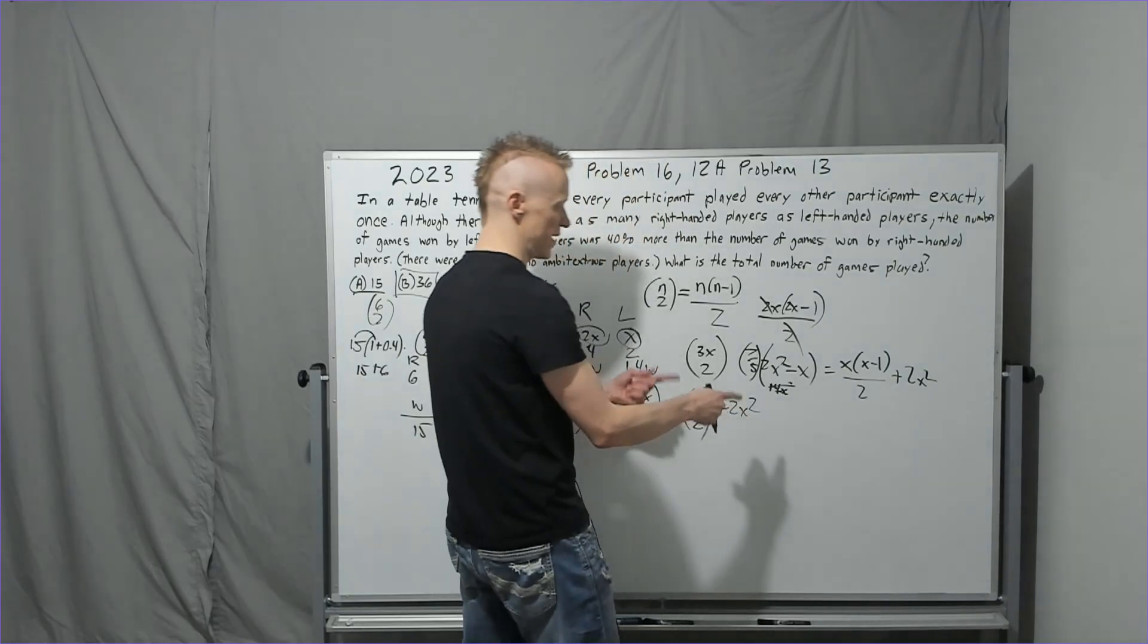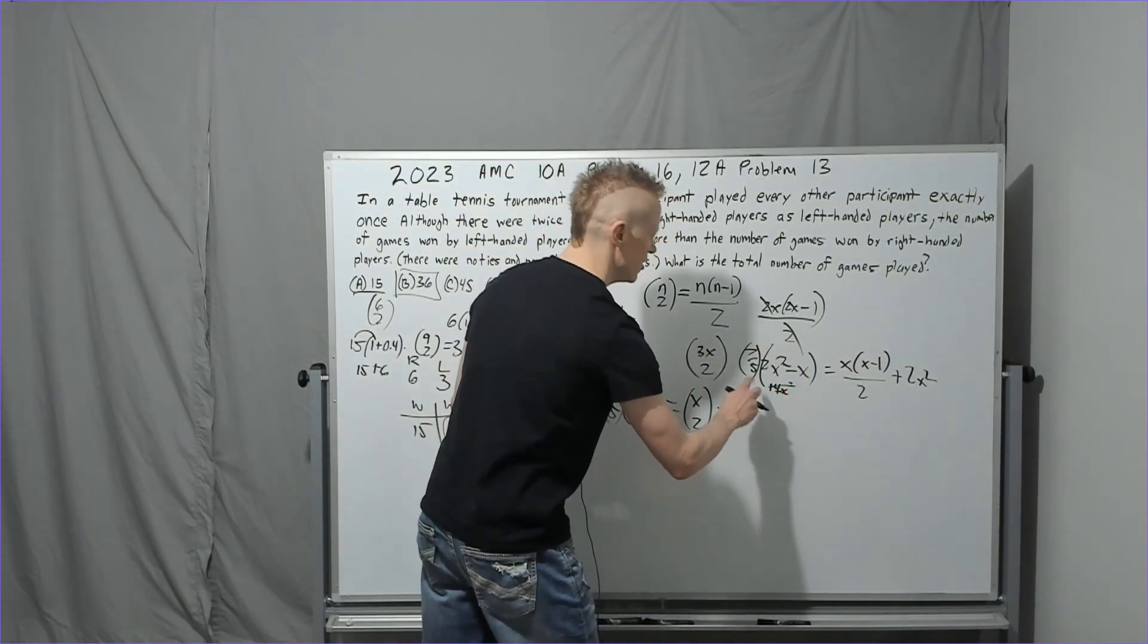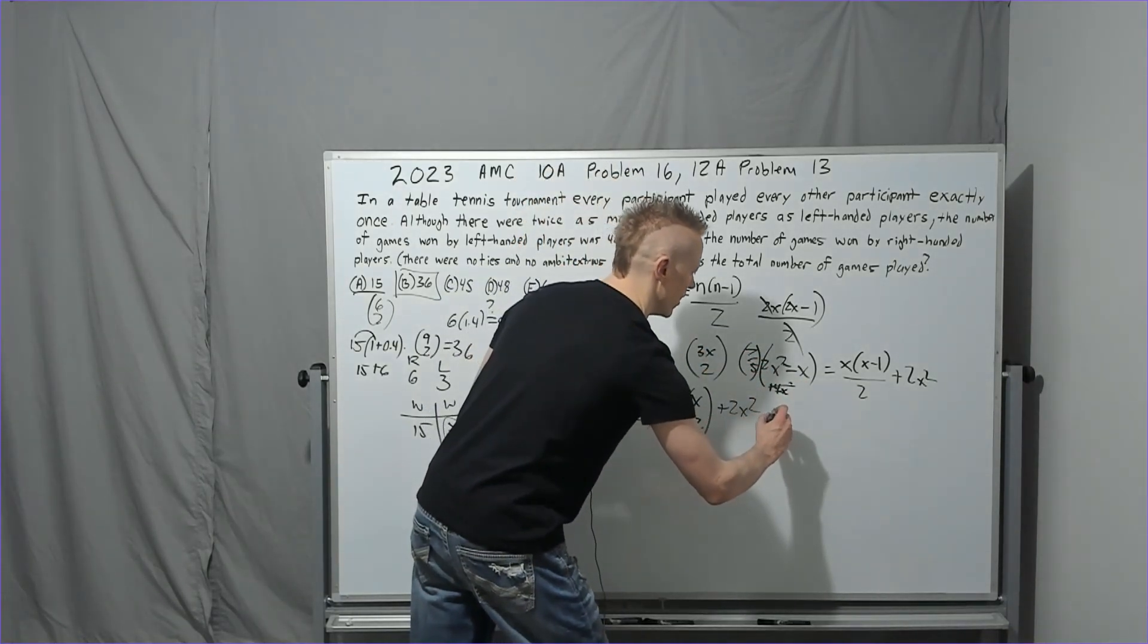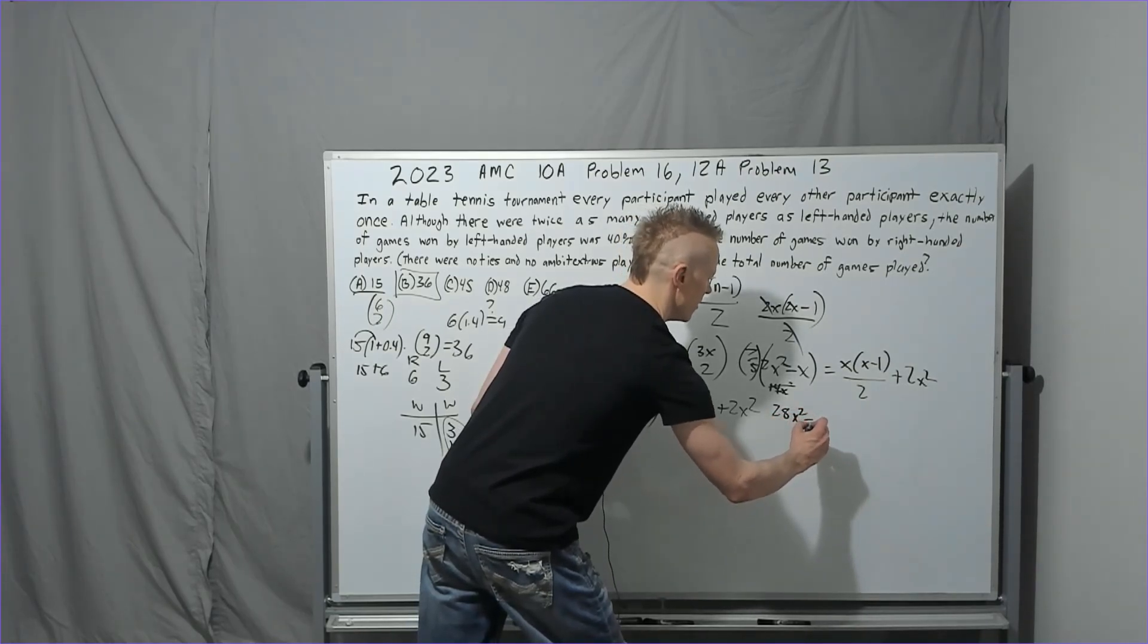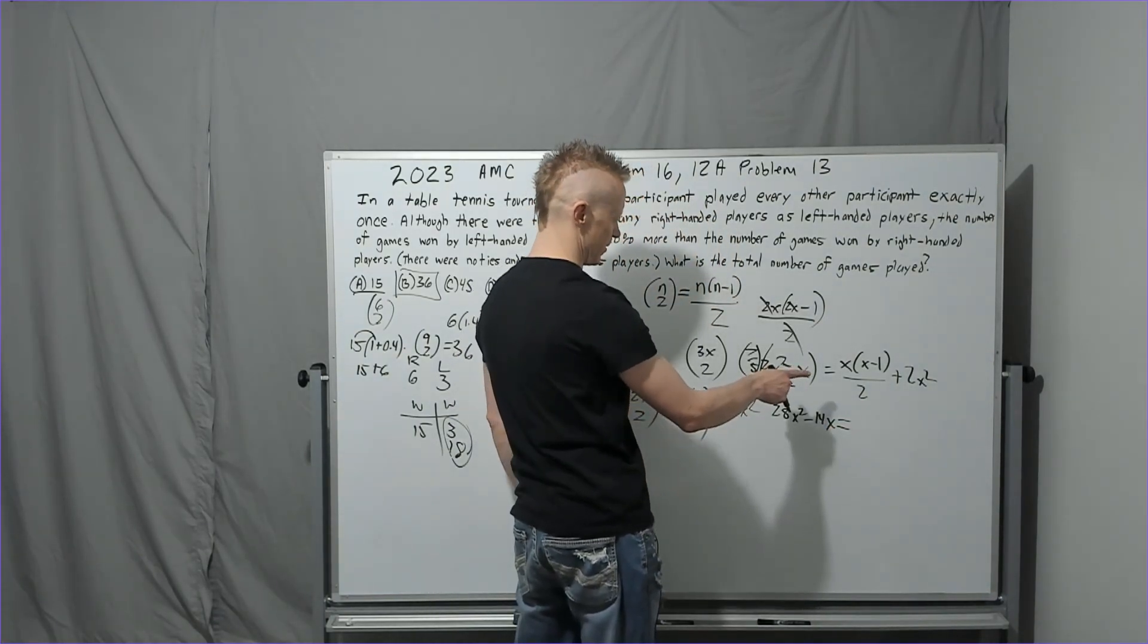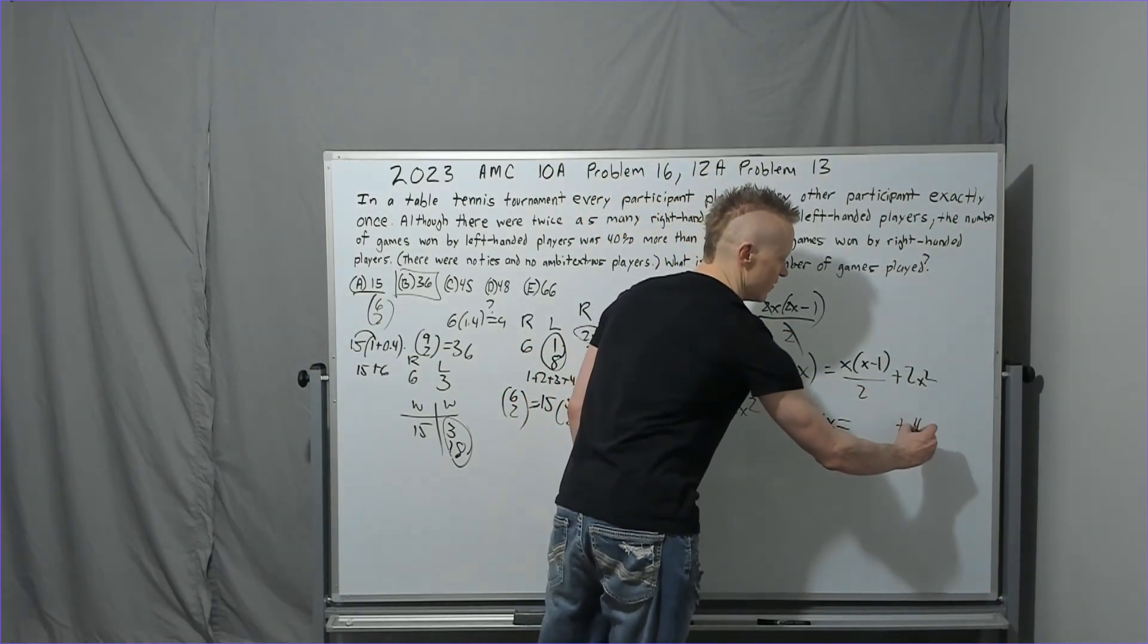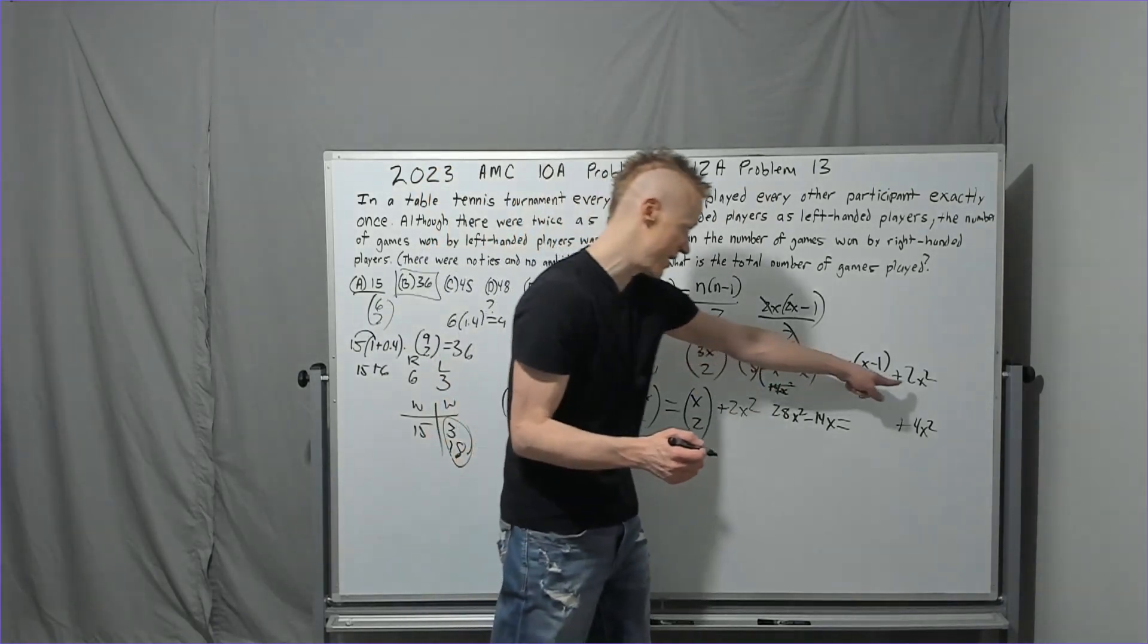This needs to equal x times x minus 1 over 2, and then plus 2x squared. Okay, so I think I am going to go ahead and multiply the 2 over to here and the 5 over to there. So I'm going to have 14, 2 times 7, 14 times 2x squared is 28x squared minus 14x. And that's going to equal, if I multiplied the 2, also the 4x squared has to get doubled.